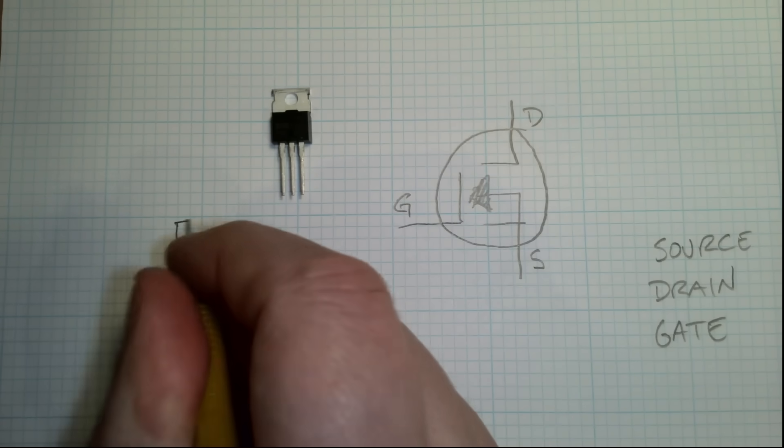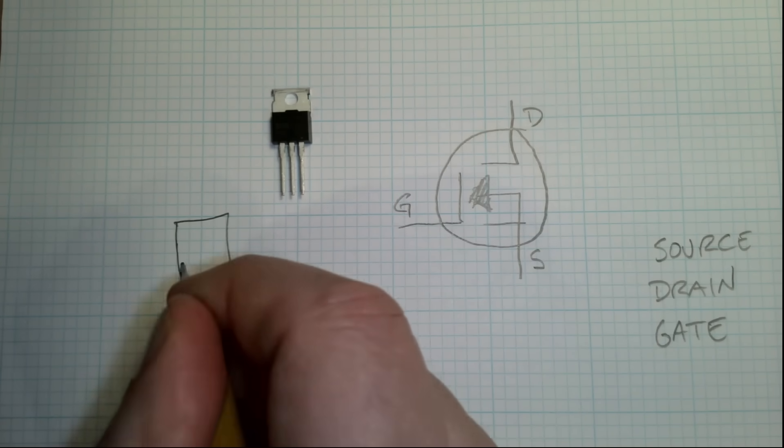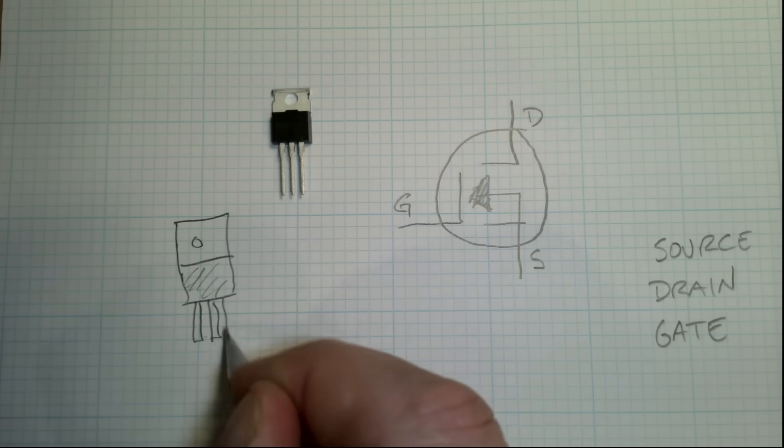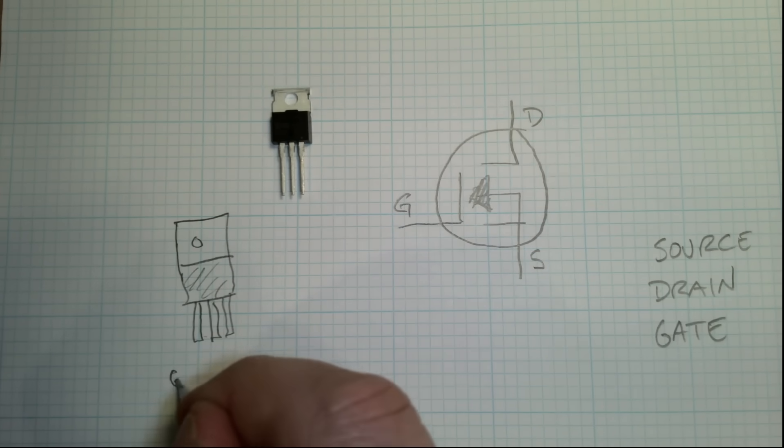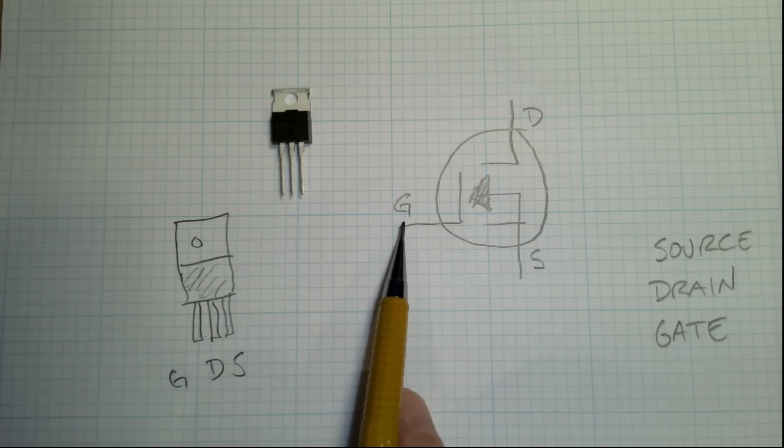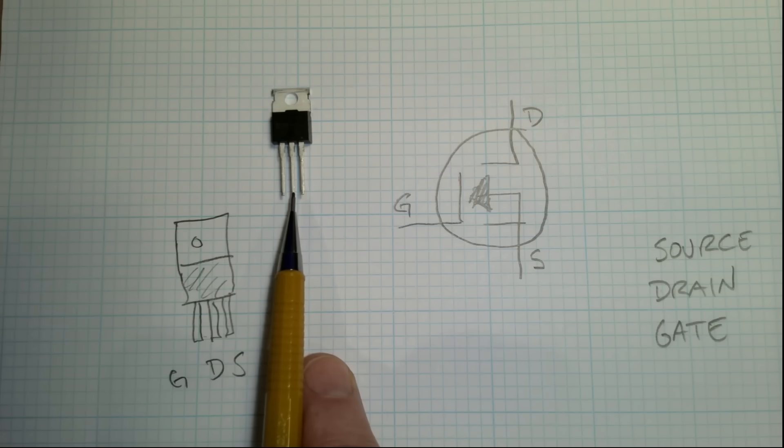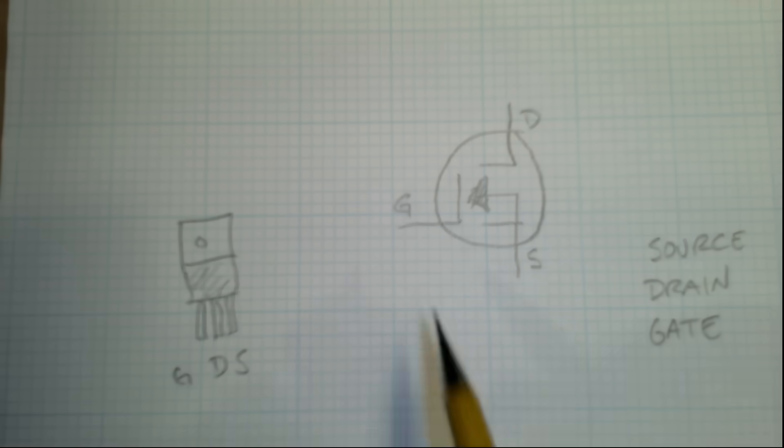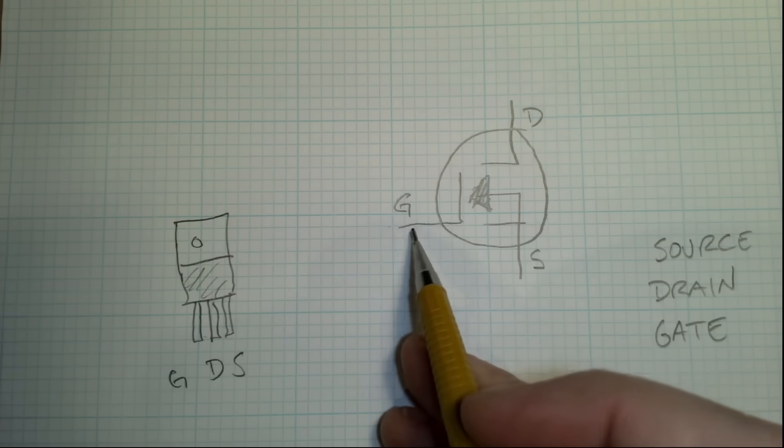if we have our part looking at it from the front, we've got three legs, it is Gate, Drain, Source. So first pin is Gate, second pin is Drain, third pin is Source. Wiring these in is super easy.